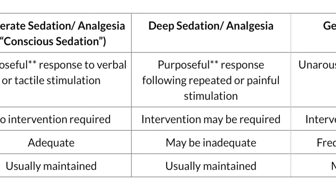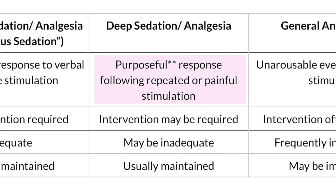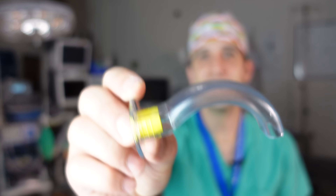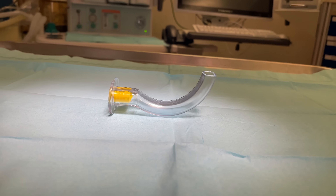Next up is deep sedation, which is defined as a purposeful response to repeated or painful stimulus. When a patient is receiving deep sedation, we typically expect there might be some compromise to both respiratory and cardiovascular function requiring some type of support. Respiratory support can include the insertion of an oral airway that goes into a patient's mouth and helps keep it open so that air can exchange easily, because when people are sedated, tissue in their mouth tends to collapse, making it more difficult to breathe on their own.